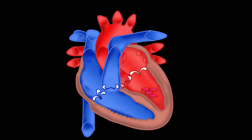This prevents blood from flowing backwards into the atrium while the ventricle contracts. As the ventricle contracts, oxygen-rich blood leaves the heart through the aortic valve into the aorta, which leads to the body, going to the arteries and eventually into the veins, completing the blood circulation in your body. And then it just starts all over again.